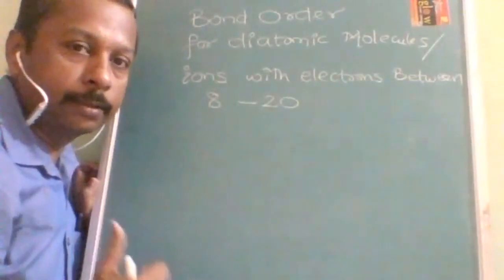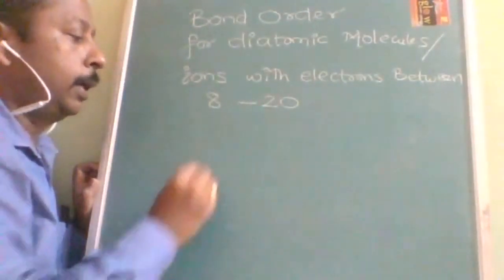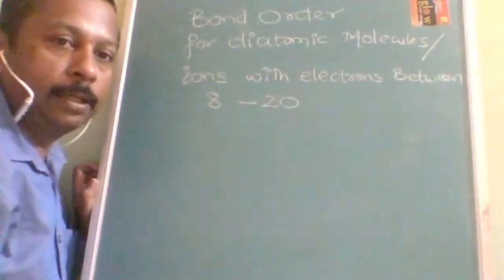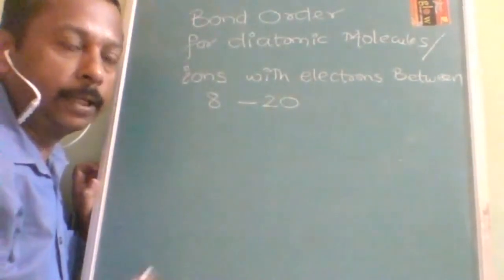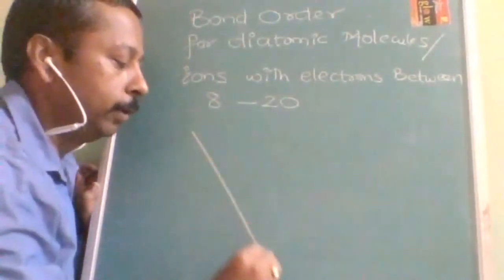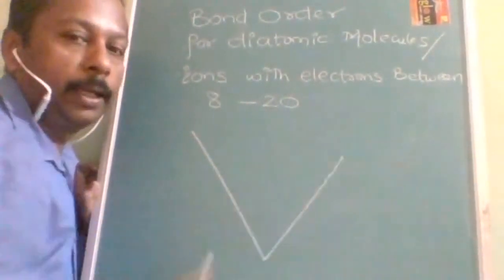So here we are going to discuss bond order for the diatomic molecular ion with electrons between eight to twenty. Are you ready students? OK, now as my name itself is V, V for Vijay, V for winning.